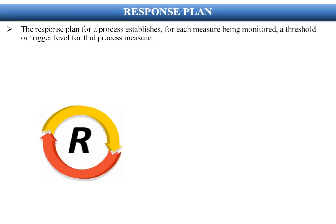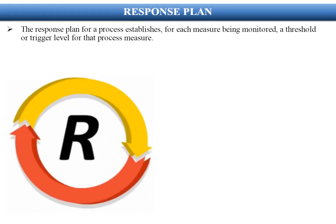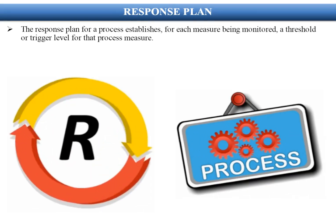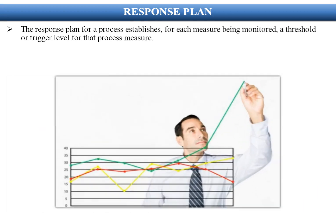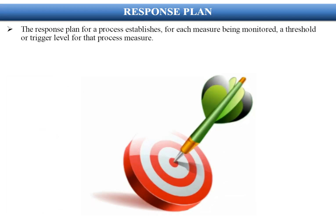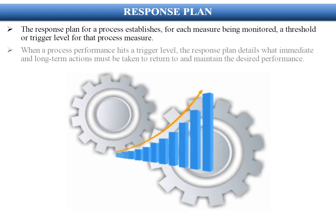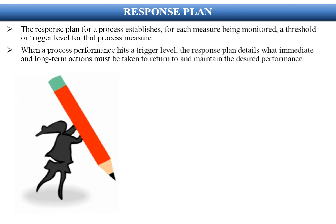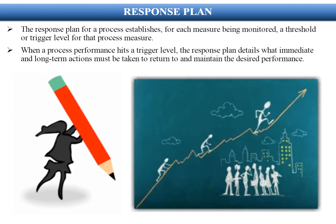The response plan for a process establishes, for each measure being monitored, a threshold or trigger level for that process measure. When a process performance hits a trigger level, the response plan details what immediate and long-term actions must be taken to return to and maintain the desired performance.